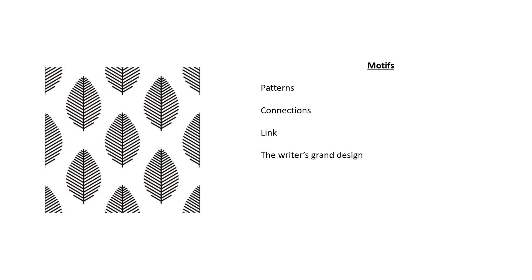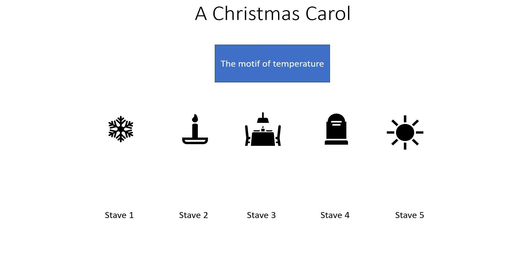To explain motifs further, let's look at Christmas Carol. The motif of temperature runs all the way through. At the beginning, Scrooge is cold himself — he's got blue lips, and it's foggy and cold. In his office, Scrooge has a small fire and Bob Cratchit an even smaller one. Then we see coldness around Scrooge when he's at school, but then the heat of the candle of the Ghost of Christmas Past.